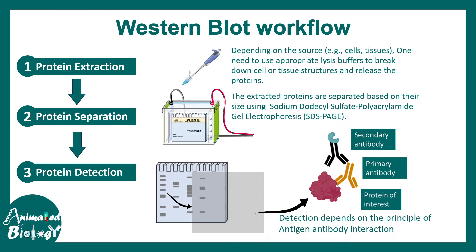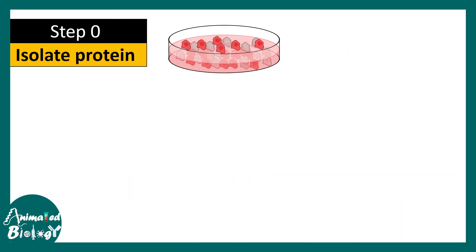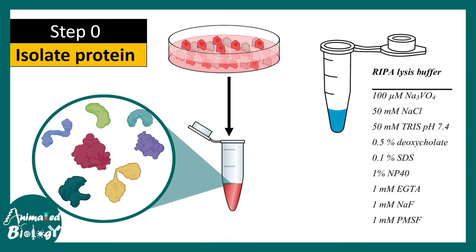Before we start the procedure, we have to think about step zero: isolating the protein from the cells. Proteins are isolated using a buffer known as RIPA lysis buffer. This is the composition of the RIPA lysis buffer, which has several components. Alongside this buffer, a protease inhibitor cocktail is also added to prevent the degradation of proteins.